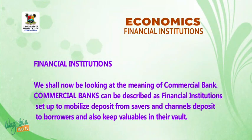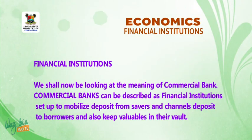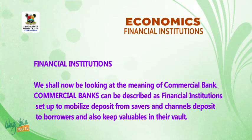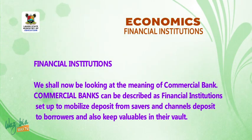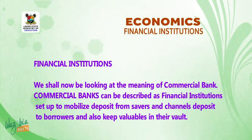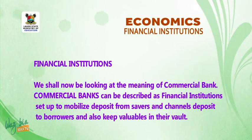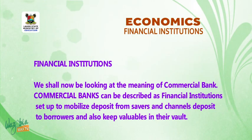The diagram shows financial institutions with two branches: traditional financial institutions and modern financial institutions. Under traditional financial institutions we have Ajo and Susu. Under modern financial institutions we have banking financial institutions and non-banking financial institutions. Banking institutions include commercial bank, central bank, development bank, community bank, and so on. Non-banking institutions include insurance companies, hire purchase and leasing companies, and building societies.